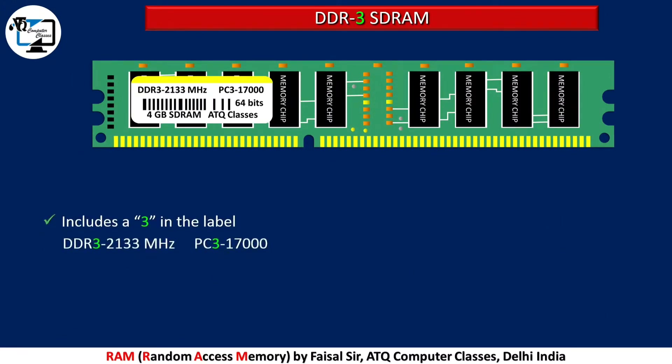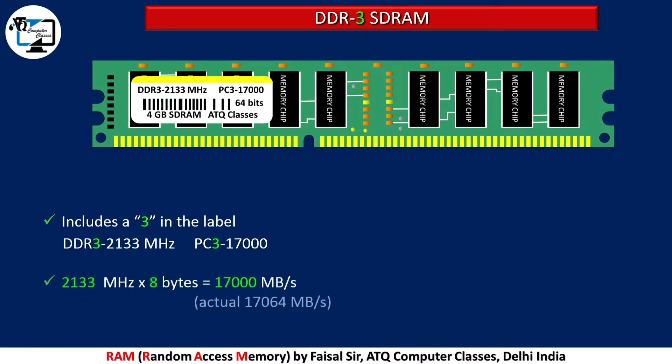For DDR3: 2133 MHz multiplied by 8 bytes equals 17,064 megabytes per second, which is rounded off to 17,000 megabytes per second on the label to make it easy to read.